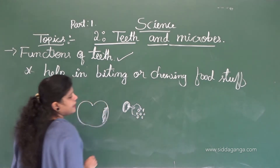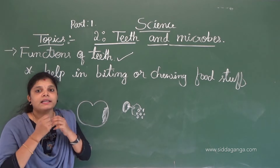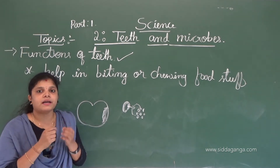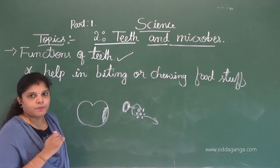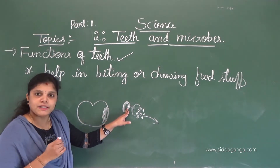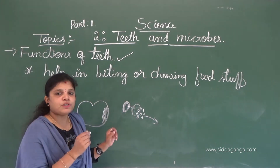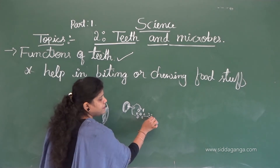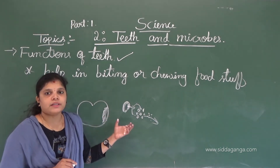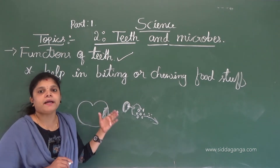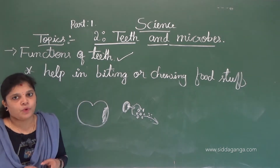After chewing, the apple piece becomes small, small pieces. This process of biting and chewing — breaking big particles into small particles — is done by the teeth. This is the main function of teeth.